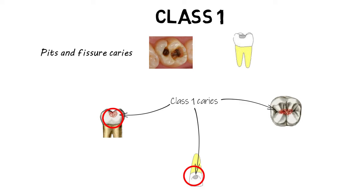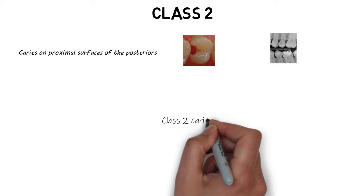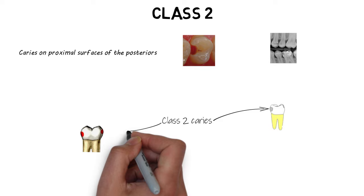Class 2 basically includes the caries that occur on the proximal surfaces of the posterior teeth. Any caries lesion occurring on either the mesial or the distal surface of any of the posterior teeth is included in the Class 2 lesions.